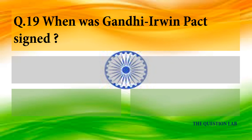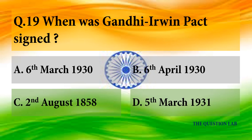Q19. When was the Gandhi-Irwin Pact signed? Answer: On 5th March 1931.